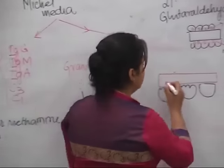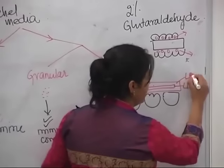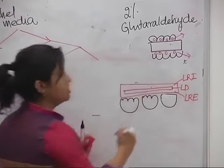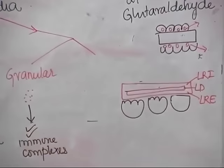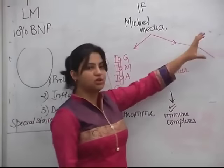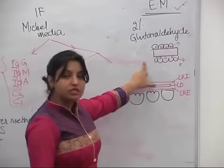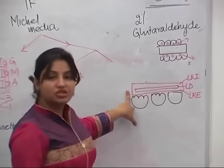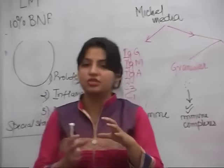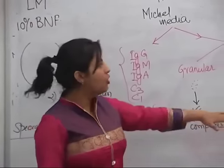The third point electron microscopy tells you is changes in the structure of the basement membrane. For example, the basement membrane is made up of three parts: lamina densa, lamina rara interna, and lamina rara externa. Any alteration in these is also seen only by electron microscopy. So these are the three important things you see on electron microscopy: the site of deposit, any alteration in the basement membrane, and any changes in the foot processes.